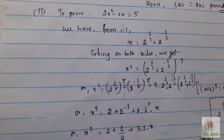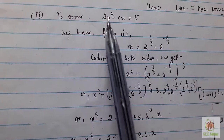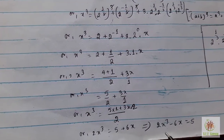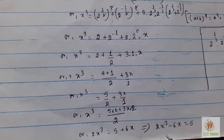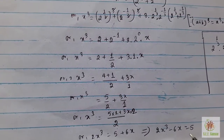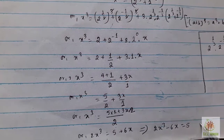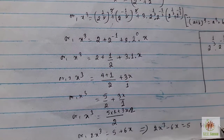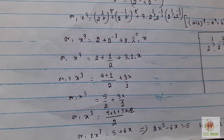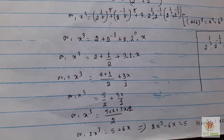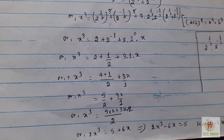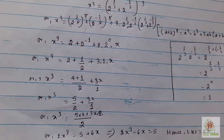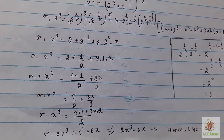Therefore LHS = 2x³ - 6x = 5 = RHS. Hence LHS = RHS, which is what we needed to prove.